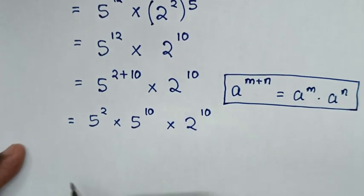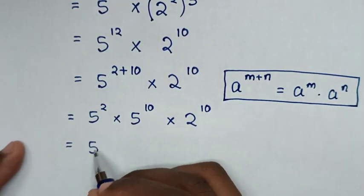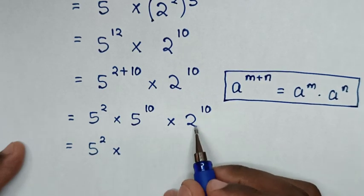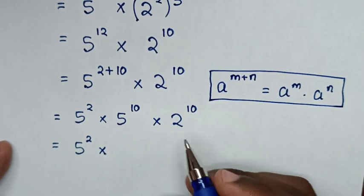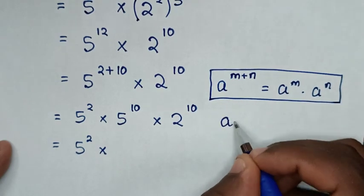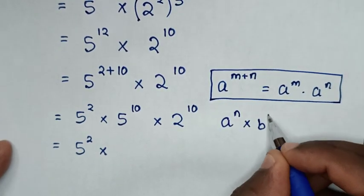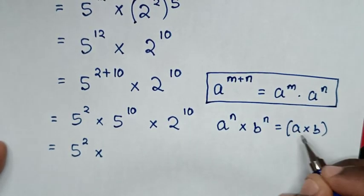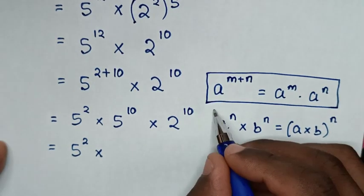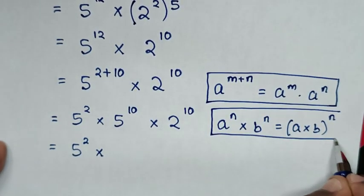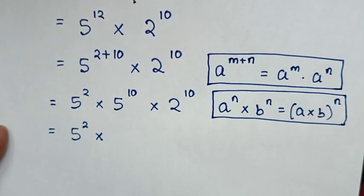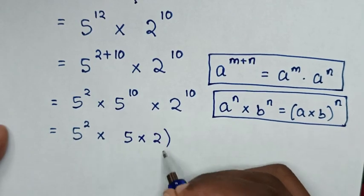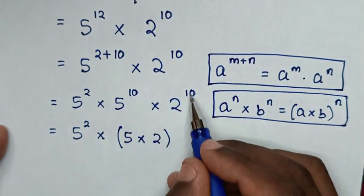Then it will be equal to 5 power of 2, times — in here — 5 power of 10 times 2 power of 10. We will apply the exponential rule, so it will be equal to 5 power of 2 times (5 times 2) bracket, common power of 10.